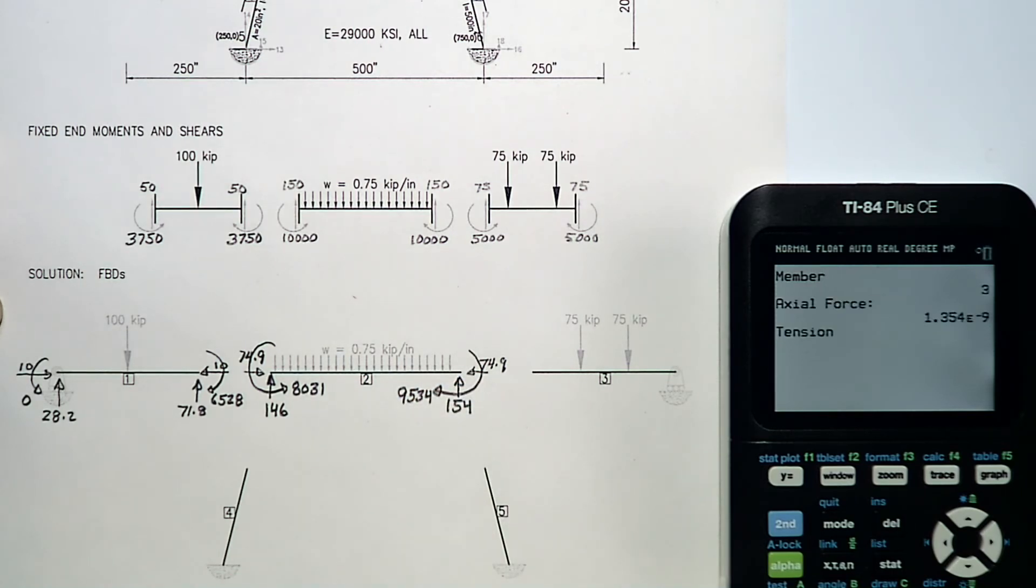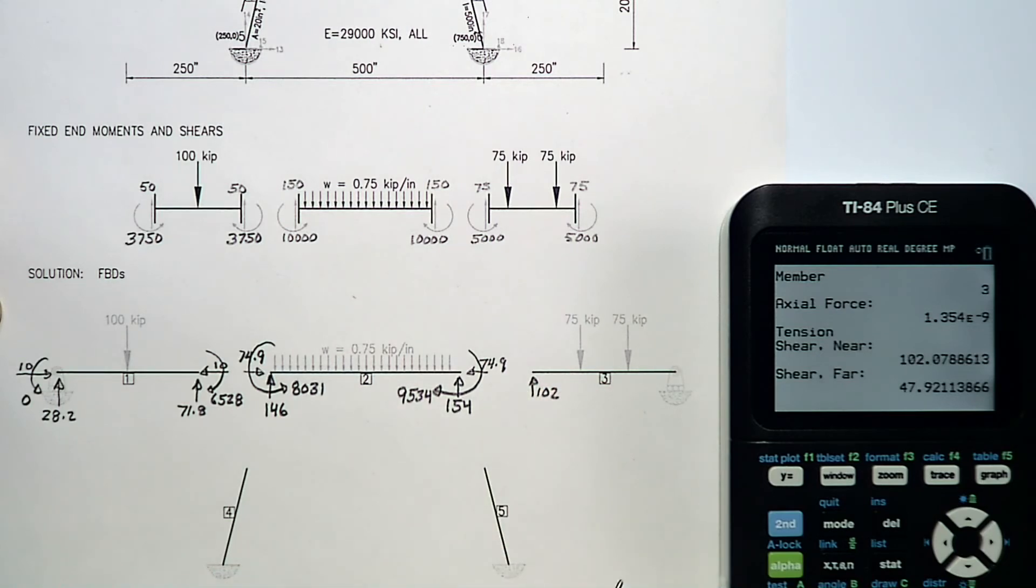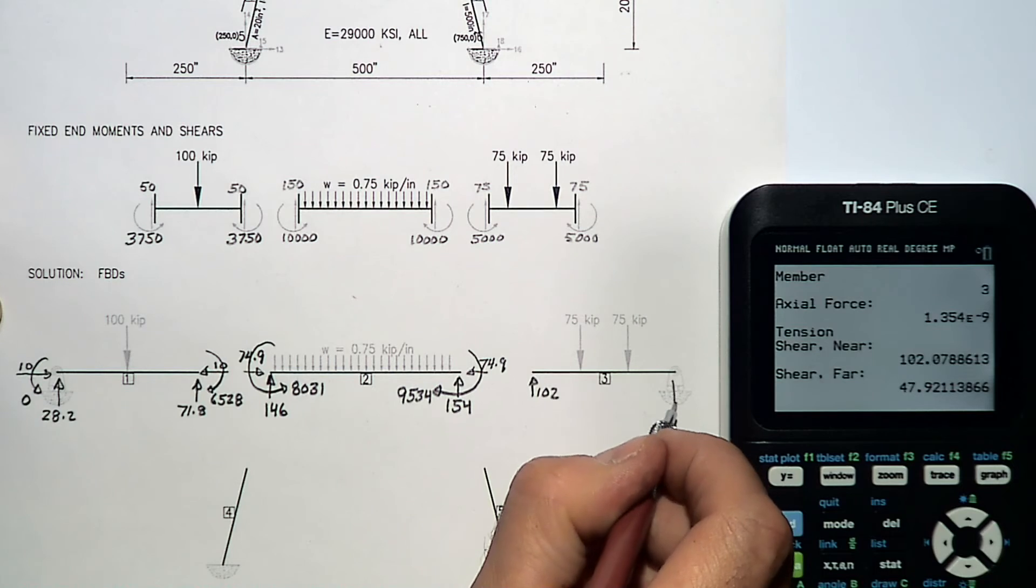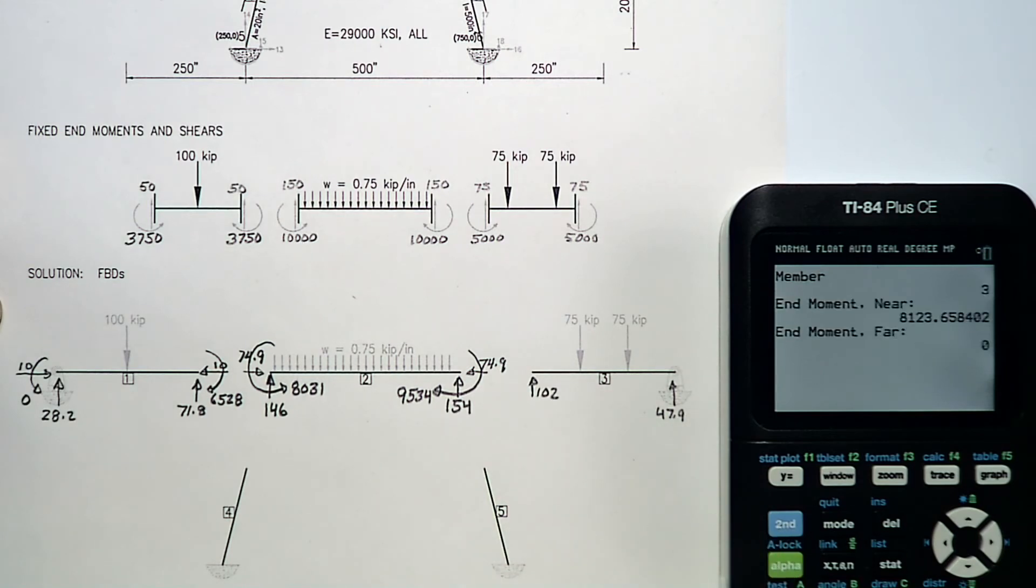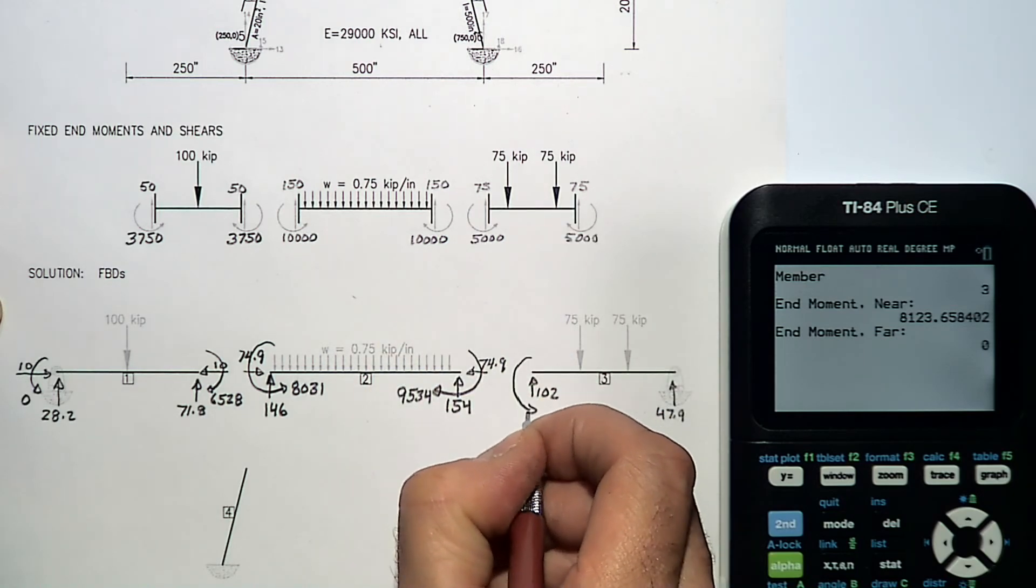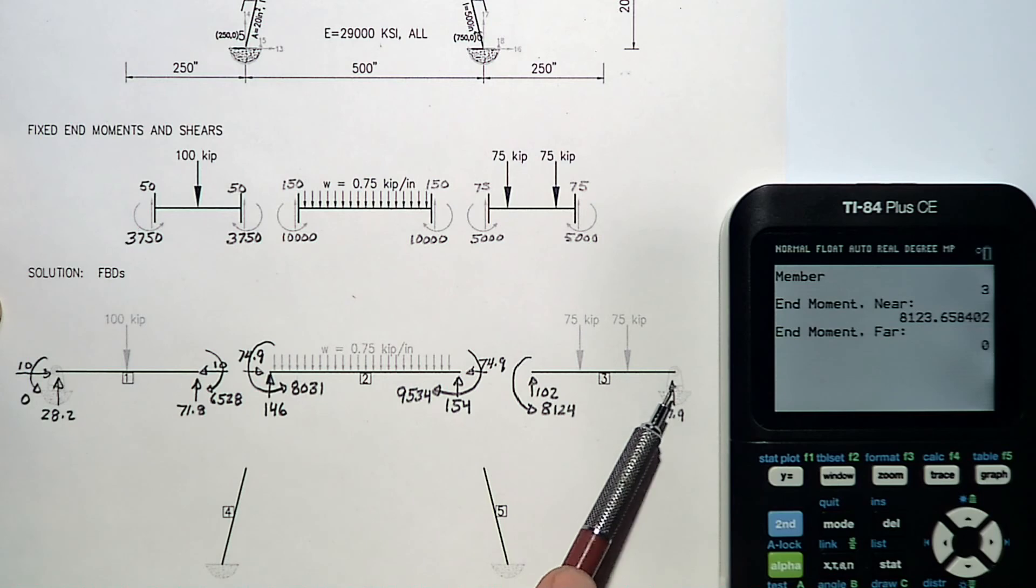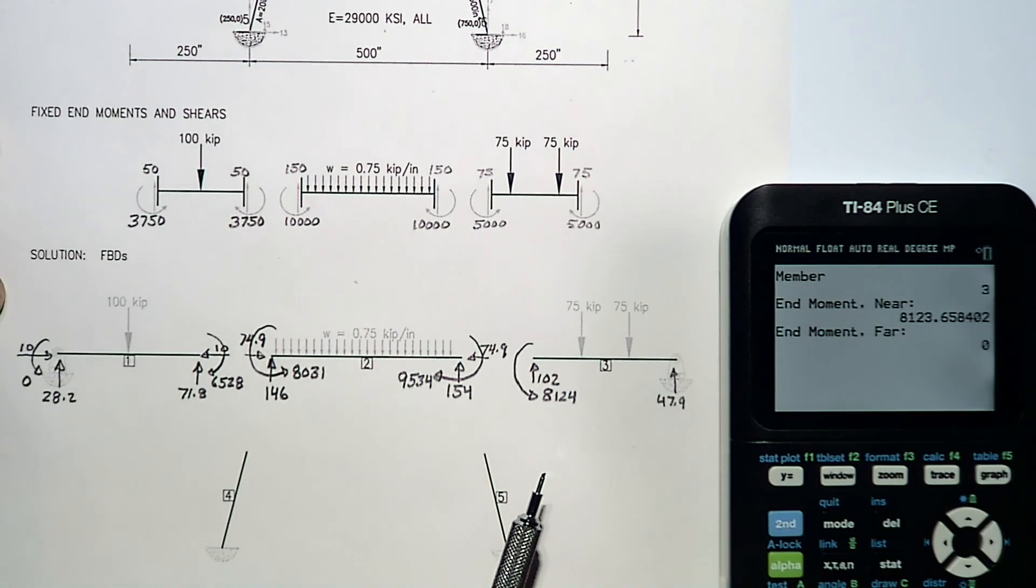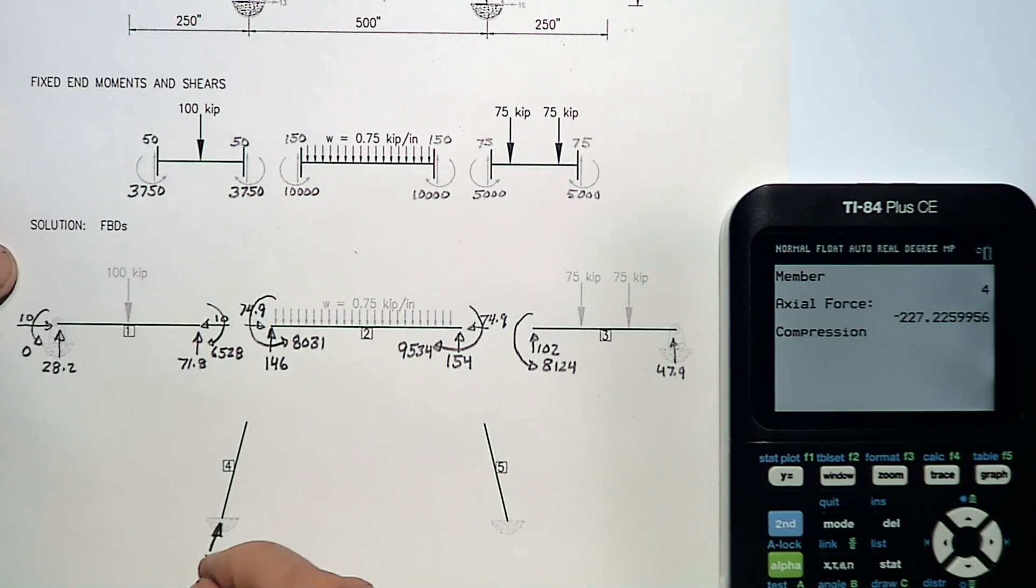Free body diagram number three. Axial force is zero naturally because that's a roller condition. Near end shear is 102. Far end shear is 47.9. Near end moment is 8,123, we'll call that 8,124. The far end moment is zero because that's a roller condition. Member four has an axial compression of 227.